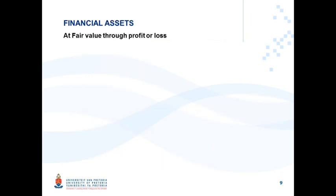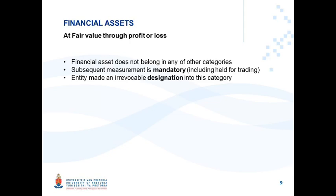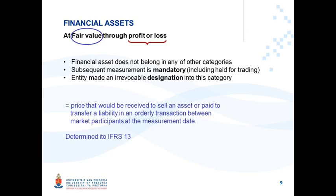The fourth category is financial assets at fair value through profit or loss. This category is for all financial assets that do not belong in any of the other categories. If the instrument doesn't fall into one of the other categories with their specific rules and criteria, it defaults to fair value through profit or loss. There is also an instance where measurement into this category is mandatory, and a third instance where an entity can irrevocably designate an instrument into this category. Fair value is determined in terms of IFRS 13. All fair value adjustments go through profit or loss, and transaction costs always go through profit or loss — they are never capitalized to the cost price of the asset in this category.